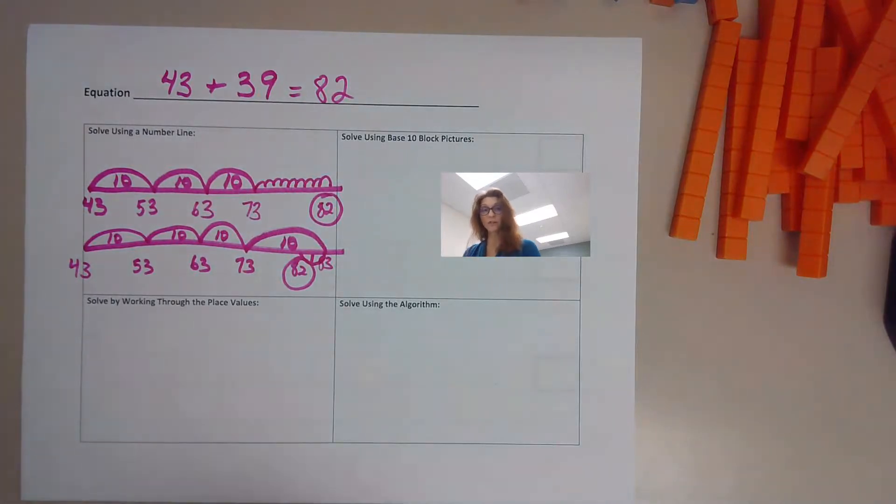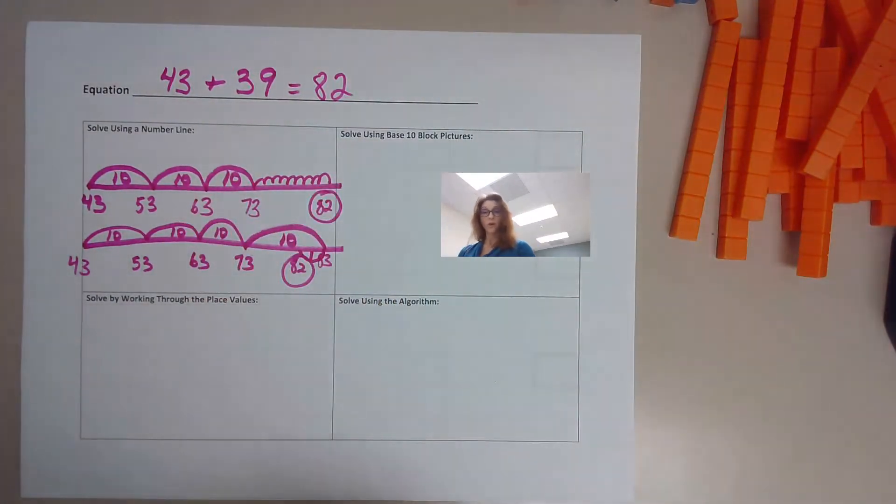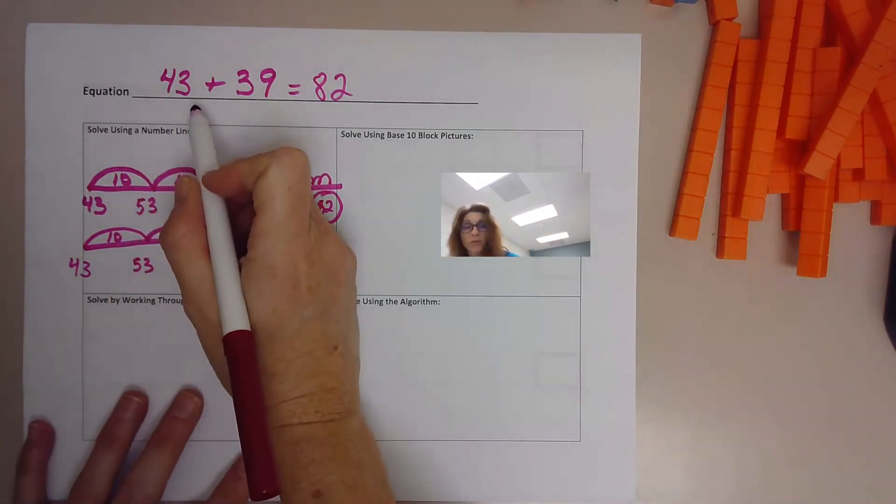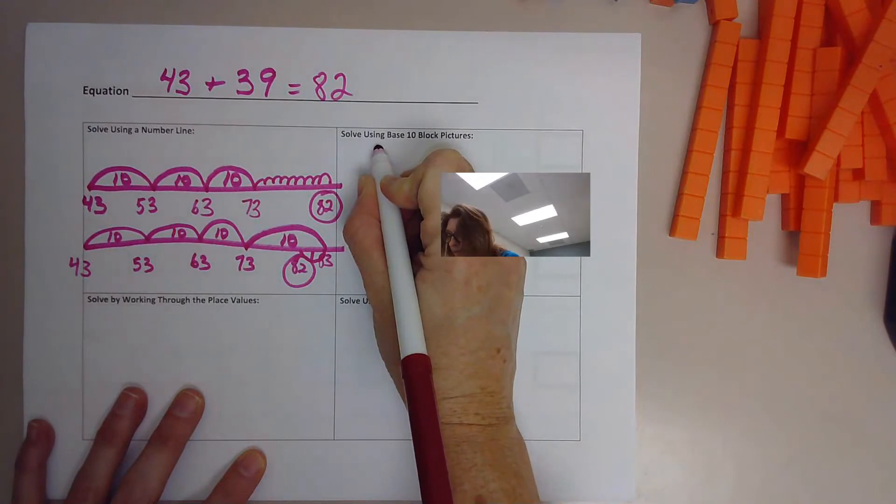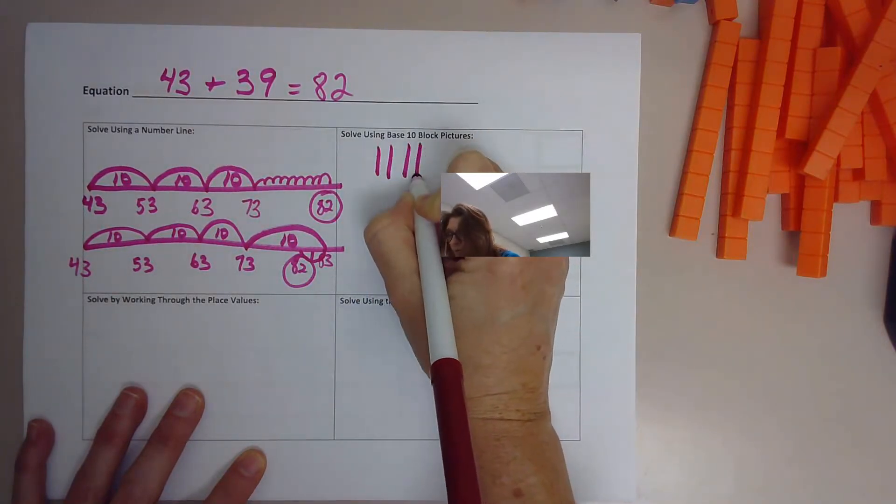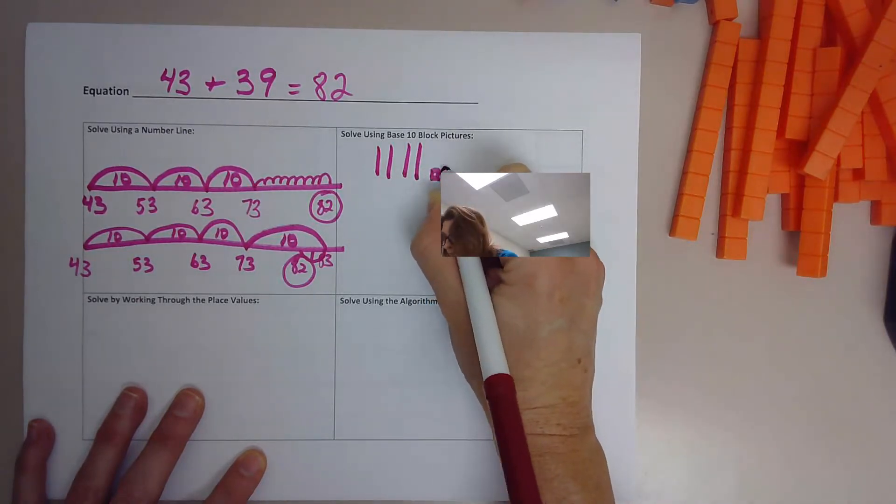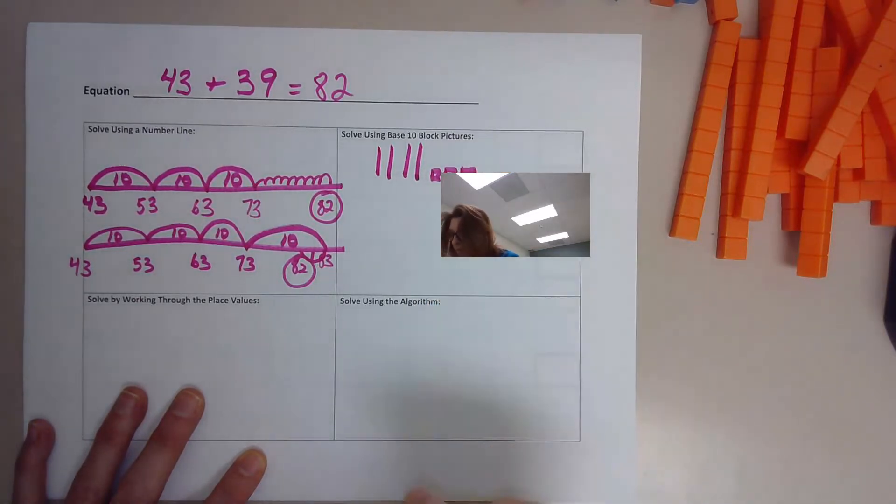Here's another way I want you to solve it. It says solve using base 10 block pictures. Okay, well, we're just going to draw them as base 10s and then we're going to combine them together to see our answer. So our first number is 43. I'm going to draw that as my base 10. 10, 20, 30, 40. And then beside it go 1, 2, 3.